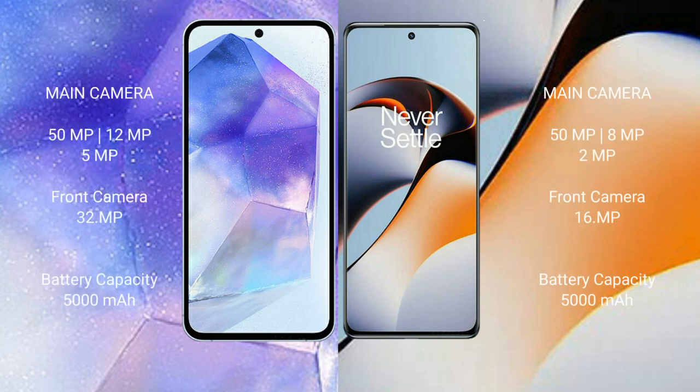Samsung Galaxy A55 features a triple rear camera setup: 50MP plus 12MP plus 5MP, and a 32MP front camera. OnePlus 11R also features a triple rear camera setup: 50MP plus 8MP plus 2MP, and a 16MP front camera.